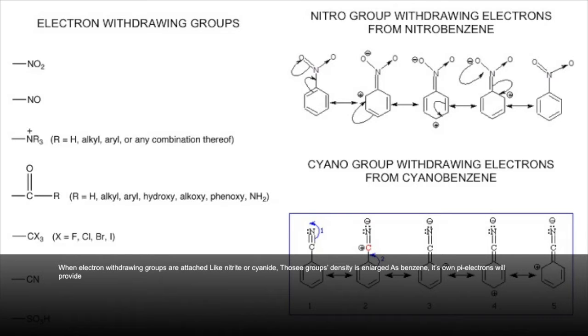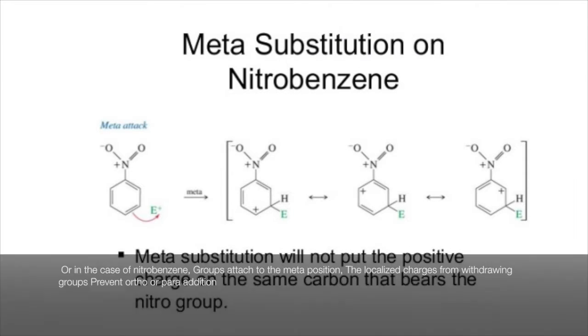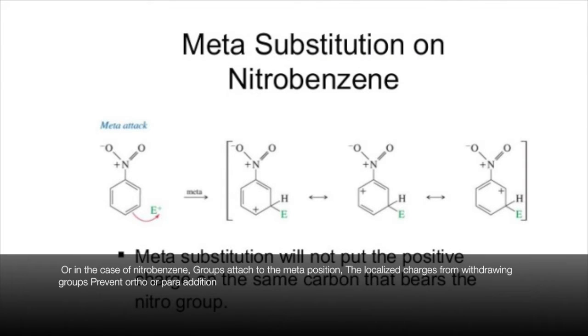Those groups' density is enlarged as benzene and its own pi electrons will provide. Both donating and withdrawing groups have influence quite strong, so when a new group bonds to toluene in the ortho or para position, it will belong. Or in the case of nitrobenzene, groups attach to the meta position. The localized charges from withdrawing groups prevent ortho or para addition.